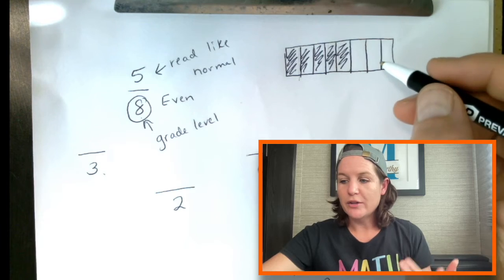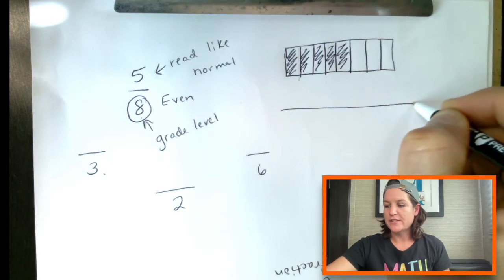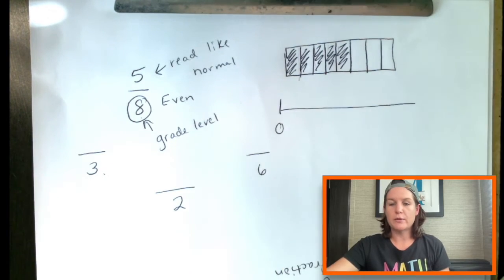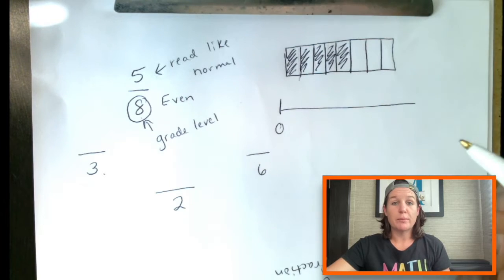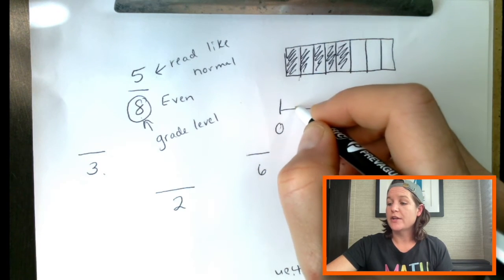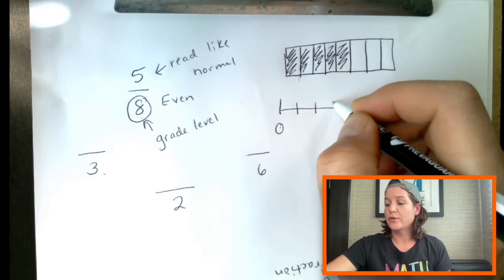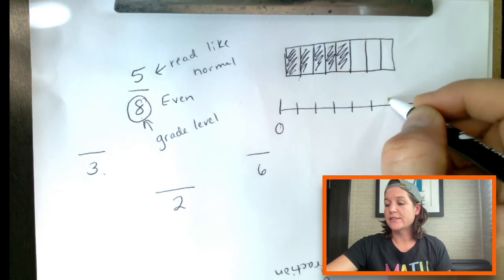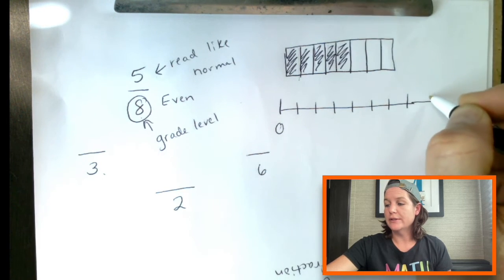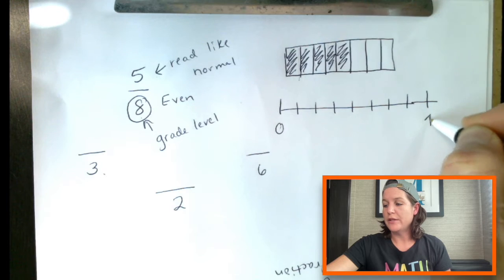So that is how you would model five eighths. And I'm just going to stick to the number line. Again, if we've got zero right here, eight would be our number of jumps. So we've got one, two, three, four, five, six, seven, eight. That would be one whole.